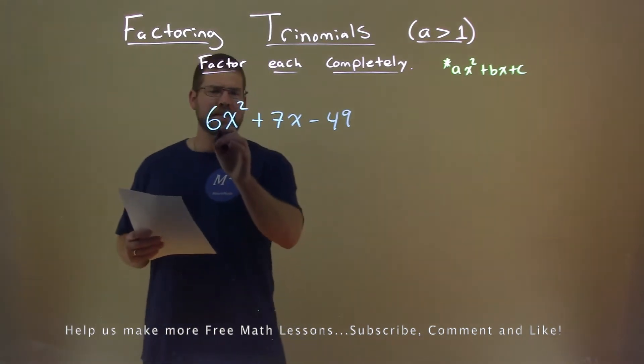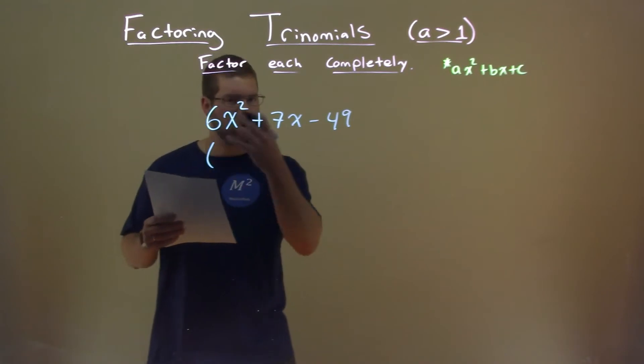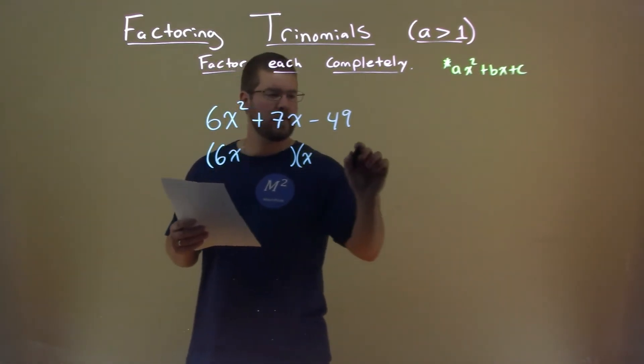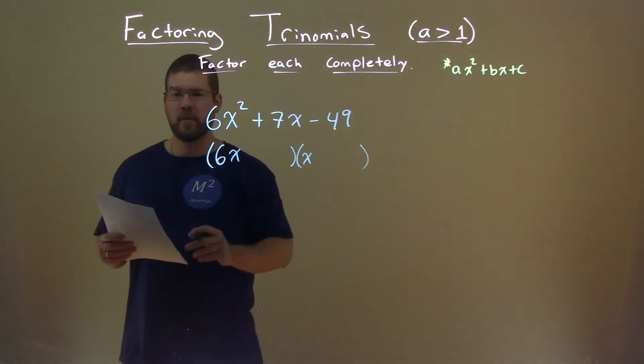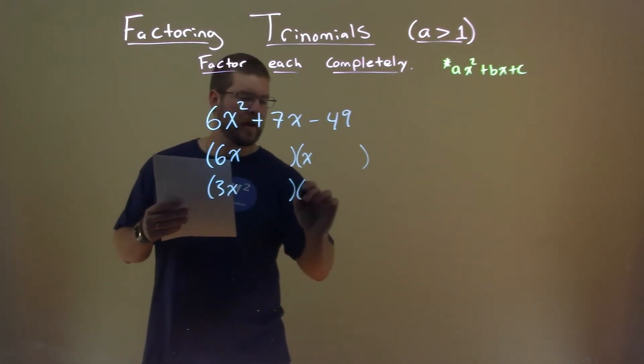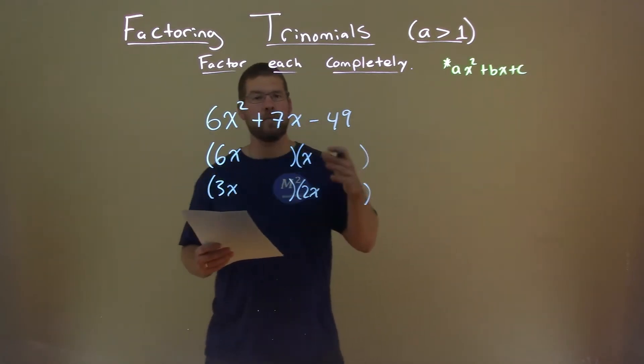Well, look at my 6, my 6x squared. That lets me know that I have two possibilities for my form setup. It's either 6x times x, like this, or what two numbers multiply to be 6, which is 3 and 2. So we're going to have 3x here times 2x. We need to keep both of those in mind as we move forward.